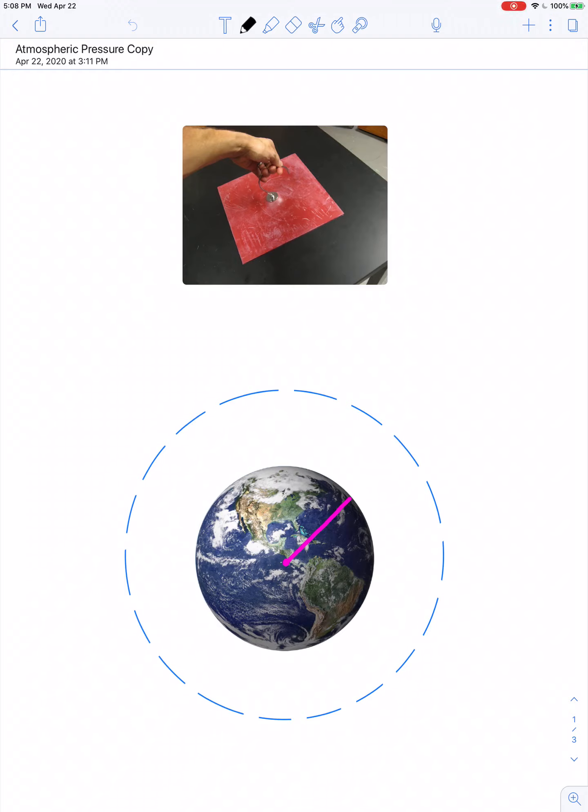If we were in the classroom right now, I'd probably show you a demonstration that involves a sheet of rubber that's about 10 inches by 10 inches. You sit it flat on the desk like shown in this picture and challenge somebody to try to lift it, and it turns out it's really difficult. It's not very heavy - it's just a 10 inch by 10 inch thin sheet of rubber. The reason it's very hard to lift has to do with atmospheric pressure.